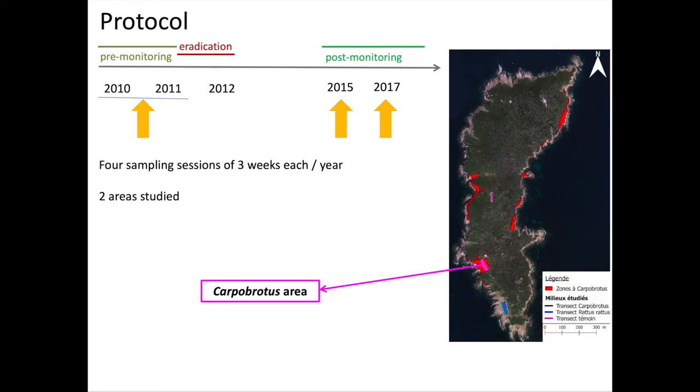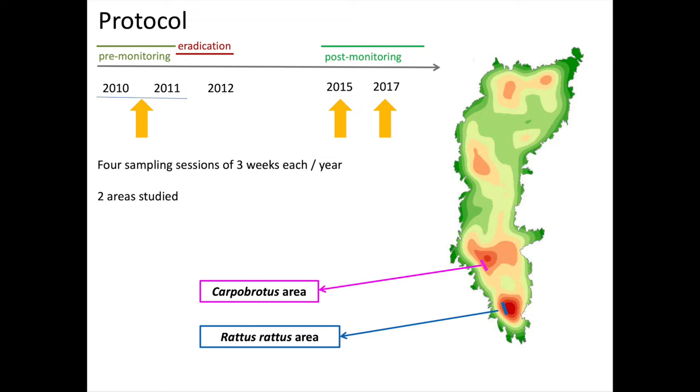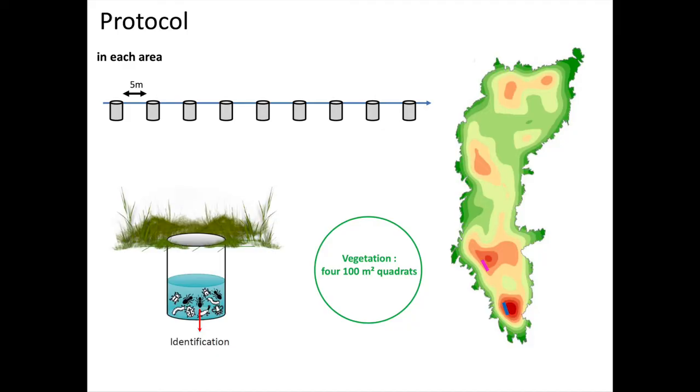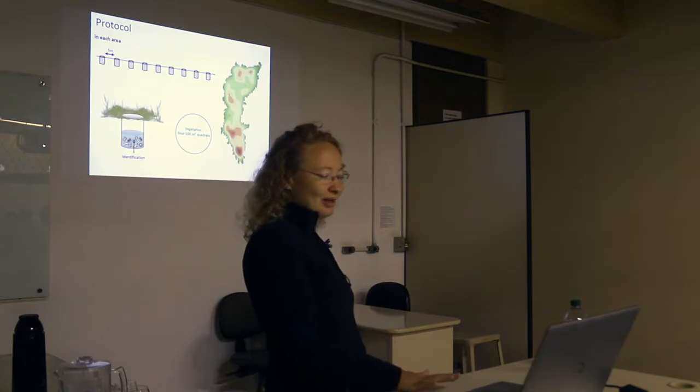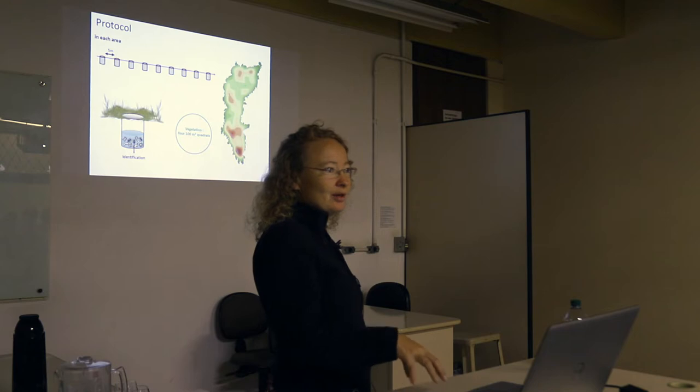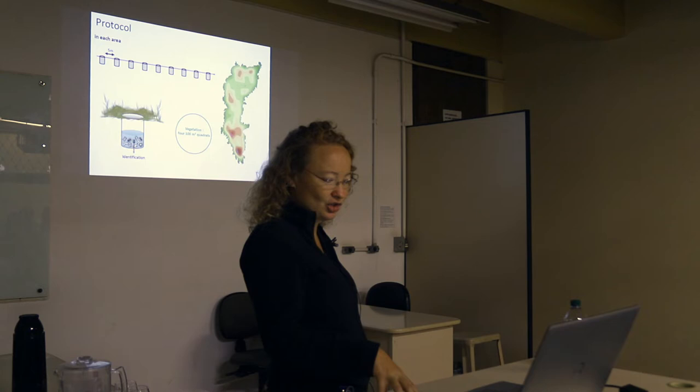We studied two areas. An area where the Carpobrotus was very thick at the time it was there, and another area where the rat population was really dense. In each of these areas, we placed one transect of ten pitfall traps spaced by five meters. We studied all the arthropods that are in the pitfall. And then we also had four 100 meter square vegetation quadrants to look at the vegetation changes.